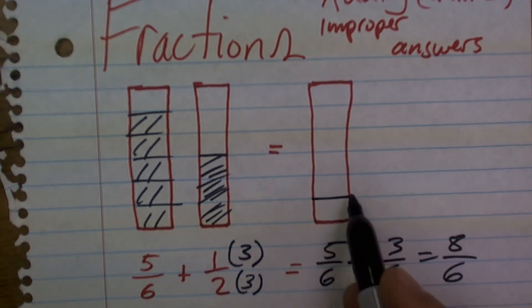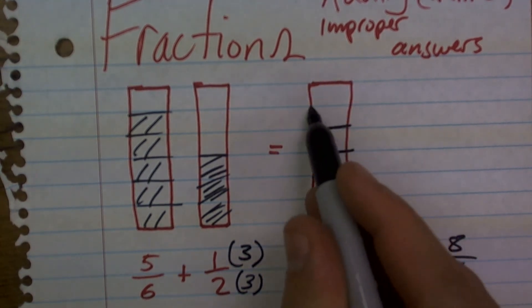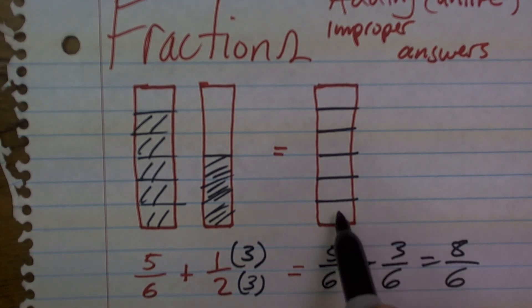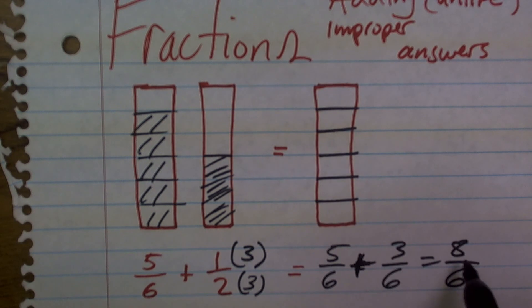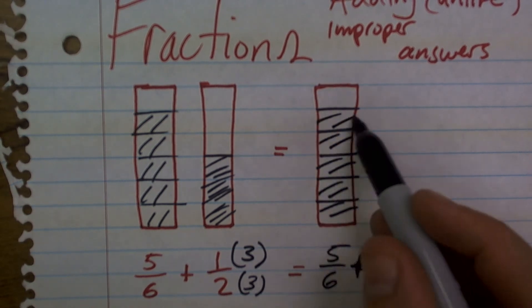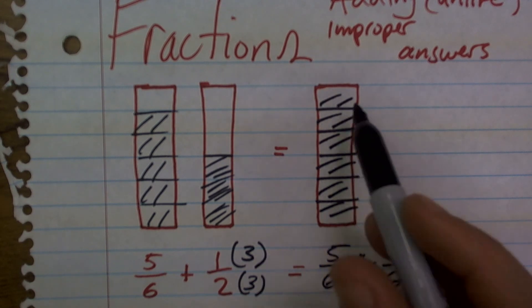So if I break up my fraction bar, remember the denominator tells you how equally to set it up, and the numerator tells you how many you're going to select. Well, now I have eight.